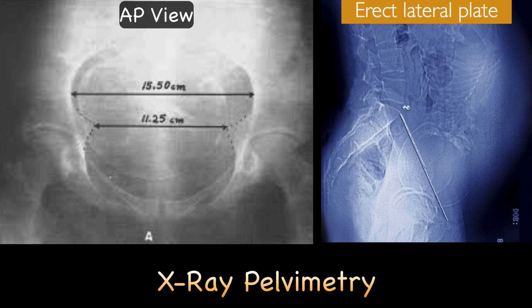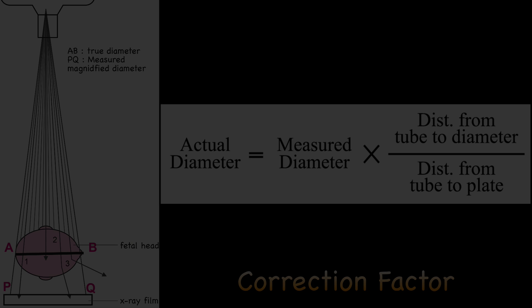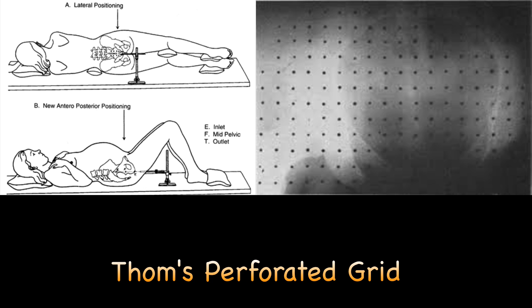X-ray pelvimetry is another method of diagnosing contracted pelvis. With the patient standing and with the X-ray tube on one side and the X-ray film on the opposite side, two views of the abdomen and pelvis are taken: erect lateral plate and antero-posterior view as shown here. Because the X-ray is a point source some distance — about 40 inches — away from the X-ray plate, the image of the diameters projected on the plate gets magnified. Hence, to get accurate measurement, a correction factor must be applied. Alternatively, correct measurements can be obtained by using a graduated scale or Thom's perforated grid in which the perforations are 1 cm apart while taking the X-ray film.